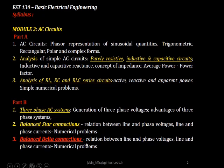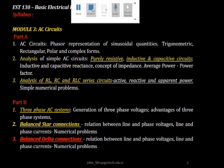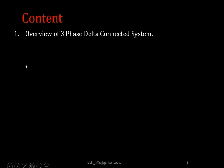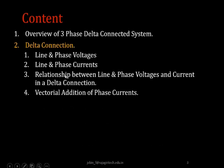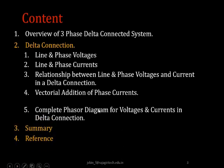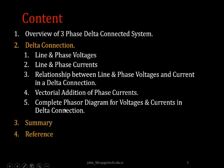We shall derive the relationship between line and phase voltages and currents in the balanced delta connected system. The contents of today's lecture: initially we shall see an overview of the three-phase delta connected system, then define line and phase voltages and currents, derive their relationship through vectorial addition of phase currents, draw the complete phasor diagram, and conclude with a summary and references.